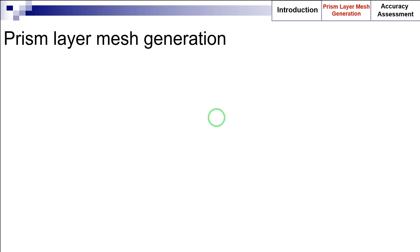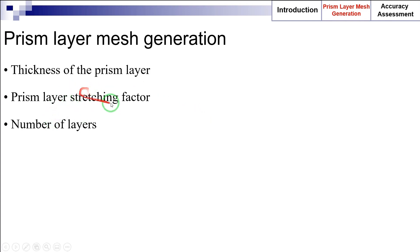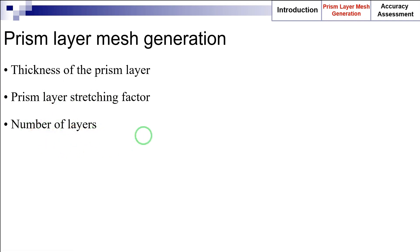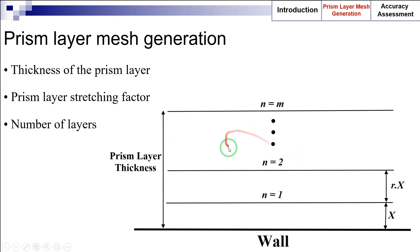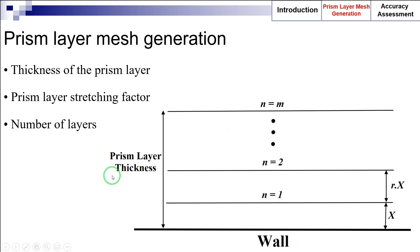In every commercial or open-source CFD code, the following three parameters can be used to completely express the prism layer mesh: thickness of the prism layer, prism layer stretching factor, and number of layers. All three parameters are shown in this figure. Here we have m layers, the thickness of the prism layer, and the prism layer stretching factor r. Note that x here is the first layer thickness immediately next to the wall.